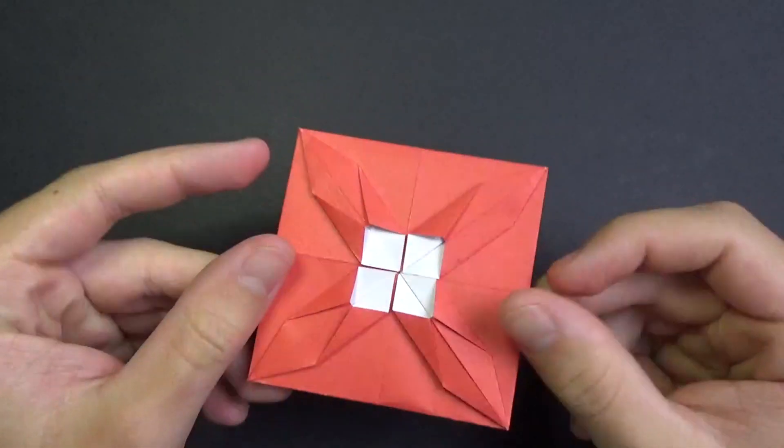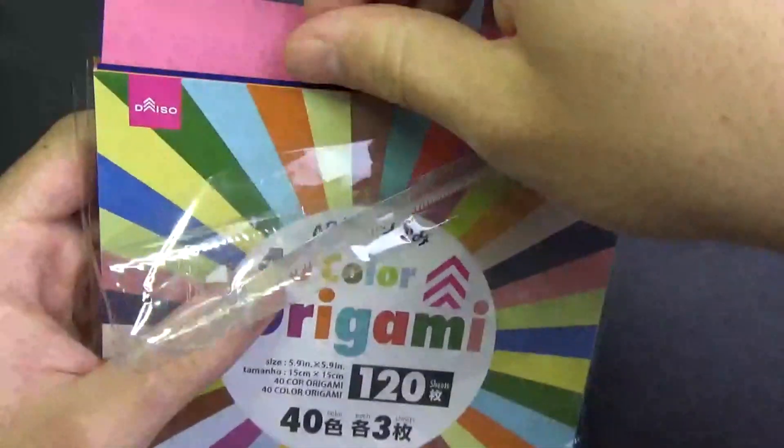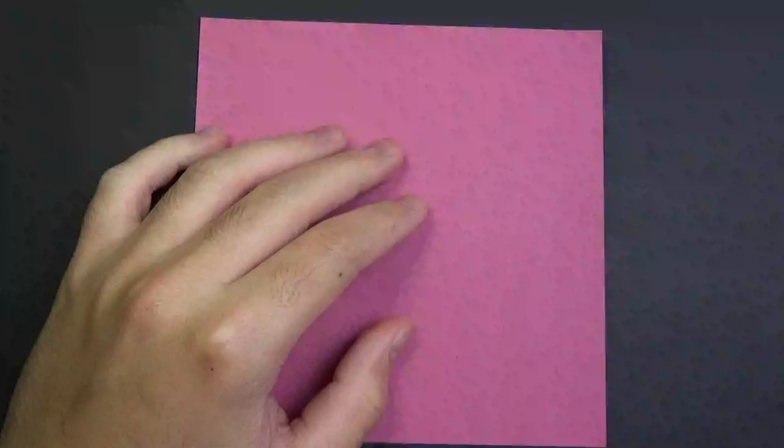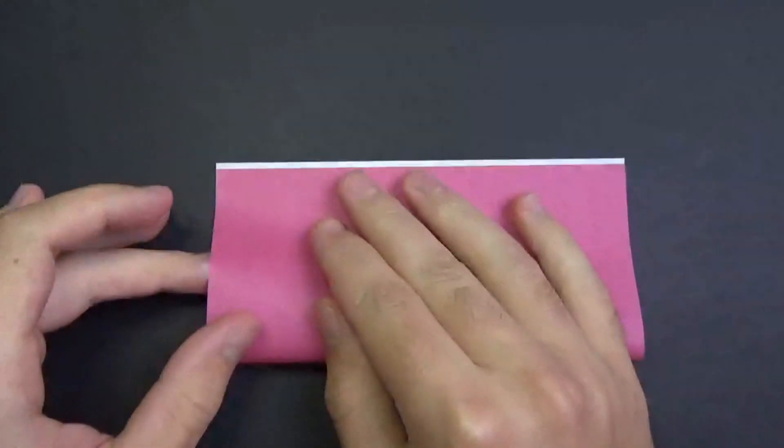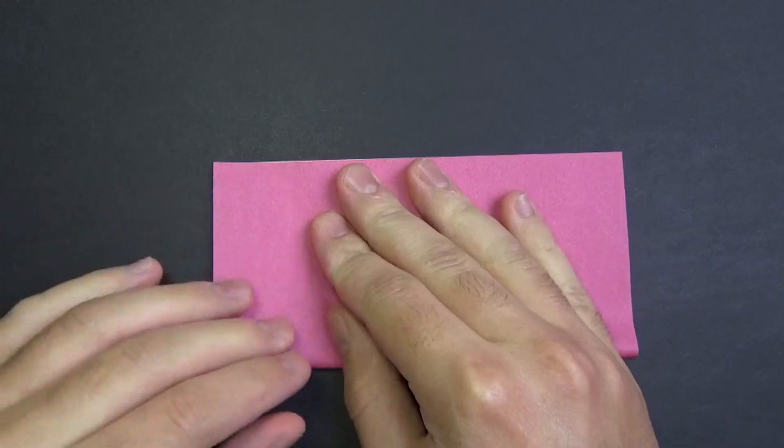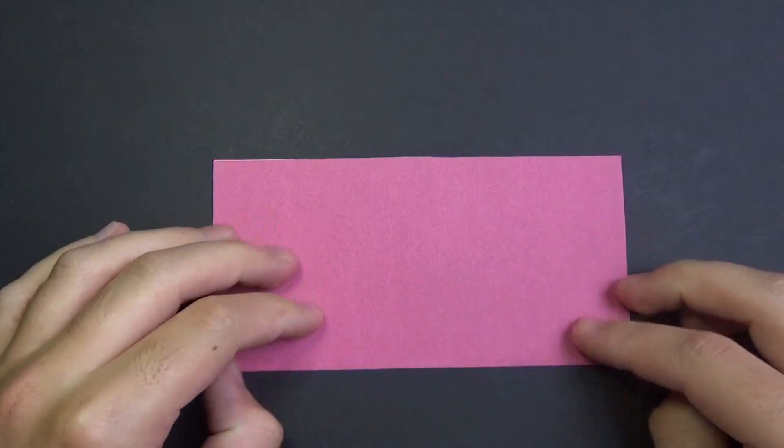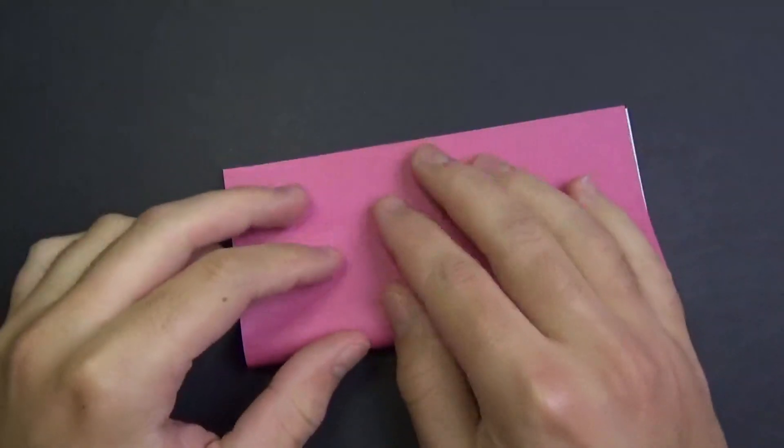Alright, so for this simple Roblox flicker, I'm going to use a 6-inch square of origami paper. Let's begin white side up and fold in half. We're going to make a 4x4 grid, so fold in half both ways like this.